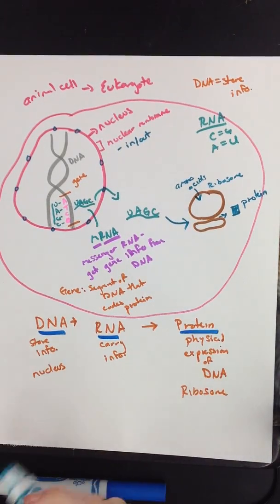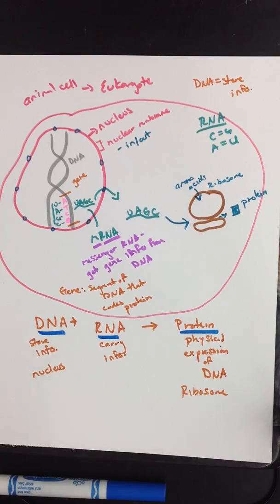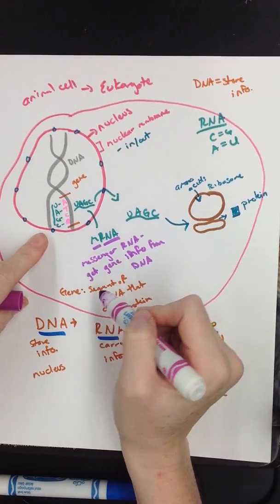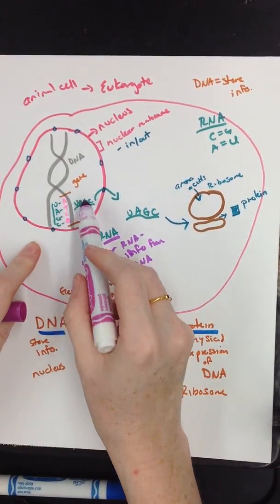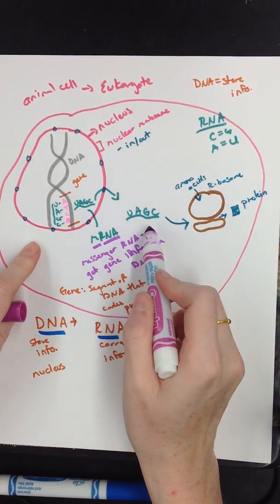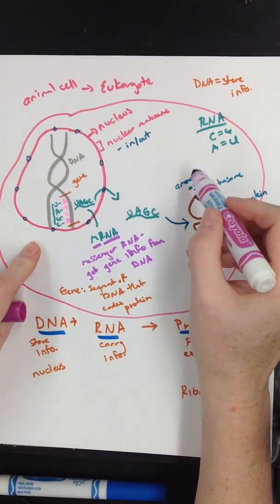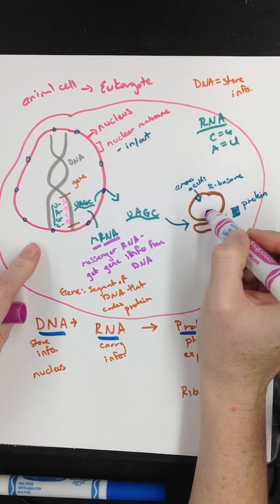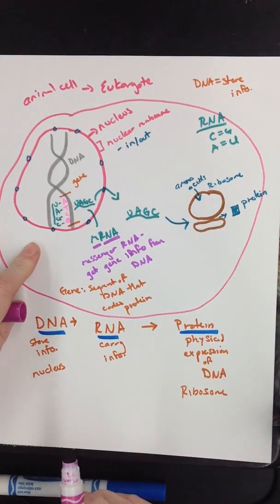And so that's how we make just specific genes inside our bodies is we get the information from my DNA. Then once I get that information, it leaves the nucleus. It'll travel to the ribosome. Amino acids will hook together. And then I'll get to make my protein.